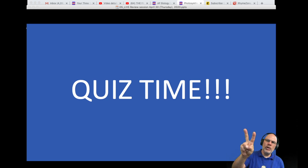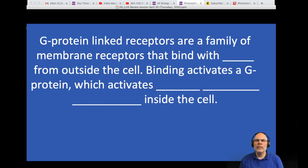Quiz time. All right. Everybody ready? I'm going to type some words into the chat. This question, it's two words. This is like a big jump, but this is what you got to be ready for at this part of the year. G-protein linked receptors are a family of membrane receptors that bind with blank from outside the cell. Binding activates a G-protein, which activates blank, blank, blank inside the cell. What's that first blank? Put a semicolon. What's the next three blanks? It's jeopardy time. See if you can answer these questions. Holy cow. That was so fast. And that exactly is the answer. Ligands, signal transduction pathways. That's what reception, cell communication, it's all about stuff like that.